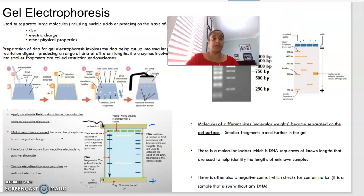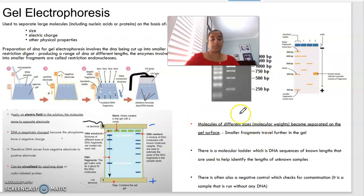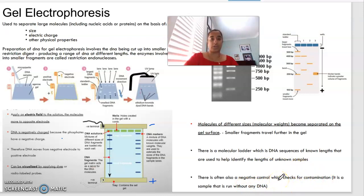You can see that this band in the first well and this band in the second column match up at 400 base pairs — they are the same segment of DNA. There is also often a negative control which checks for contamination, running a sample without any DNA to make sure everything is working properly.